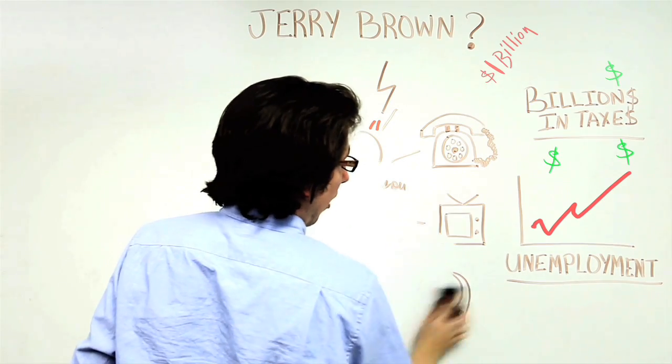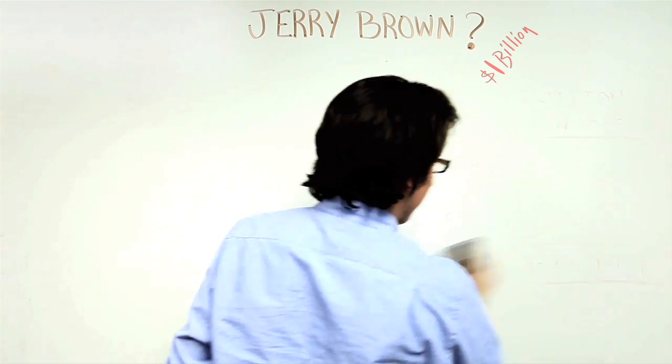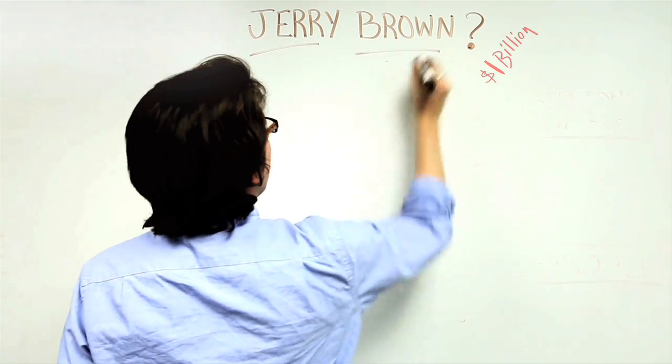But unfortunately, Jerry Brown's records are sealed until 2038. He won't let you take a look at them so we can see what else he did to you while he was in office. He could just open them up, but he won't.